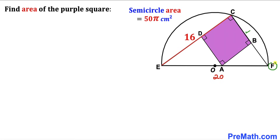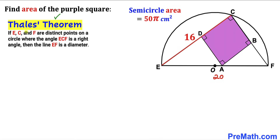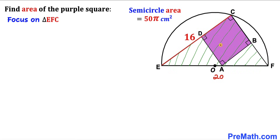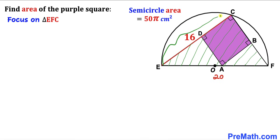In the next step, I extend line CB all the way to point F, giving us chord CF. Recall Thales' theorem: if E, C, and F are distinct points on a circle and angle ECF is a right angle, then EF is the diameter. Since angle ECF is 90°, points C, B, and F lie on the same line, giving us right triangle ECF.